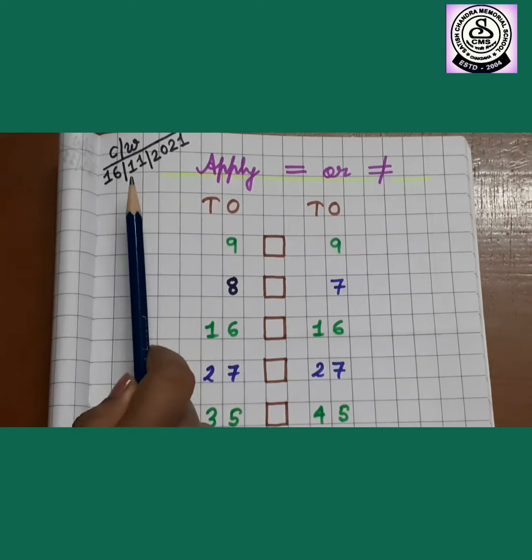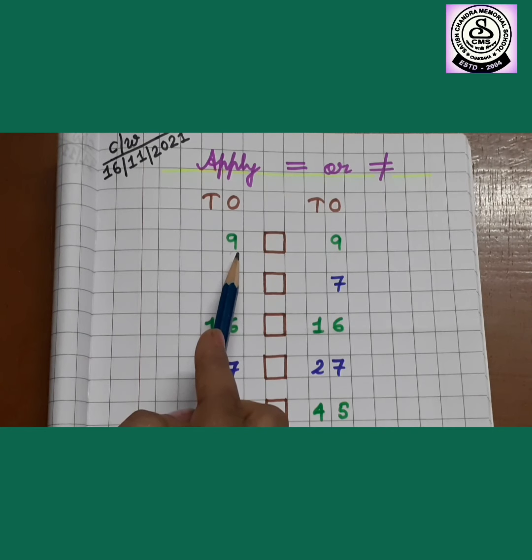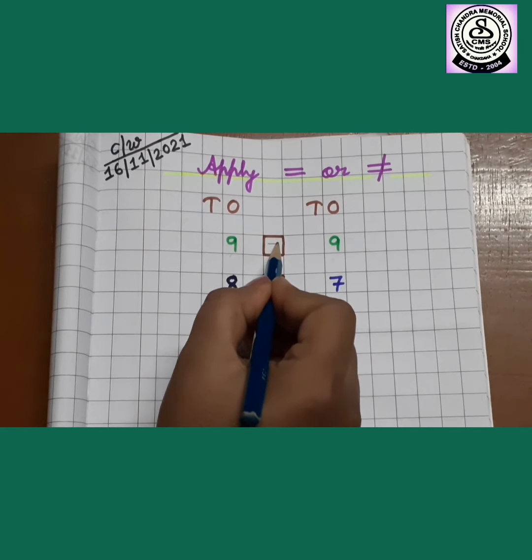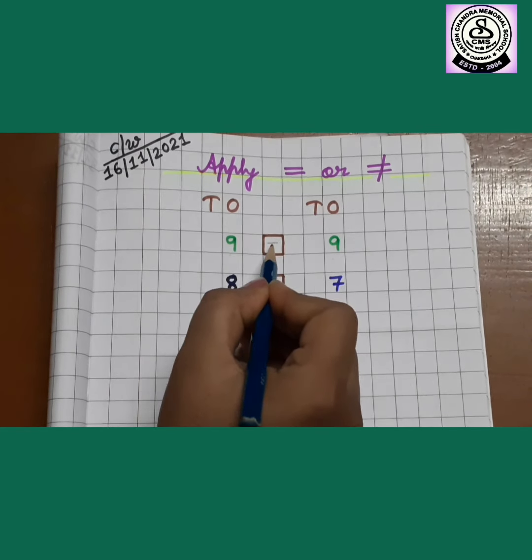Now see 9, 9. In the left side we have 9. In the right side also we have 9. Now tell me what we need to use. Are they same? Yes they are. So when they are same we use equal to.